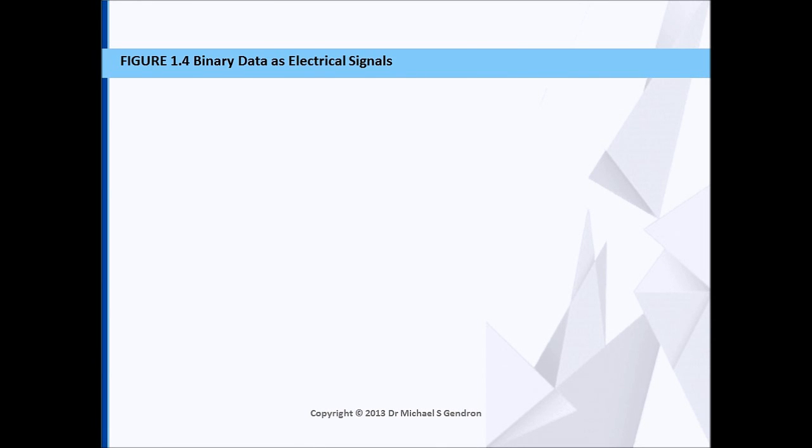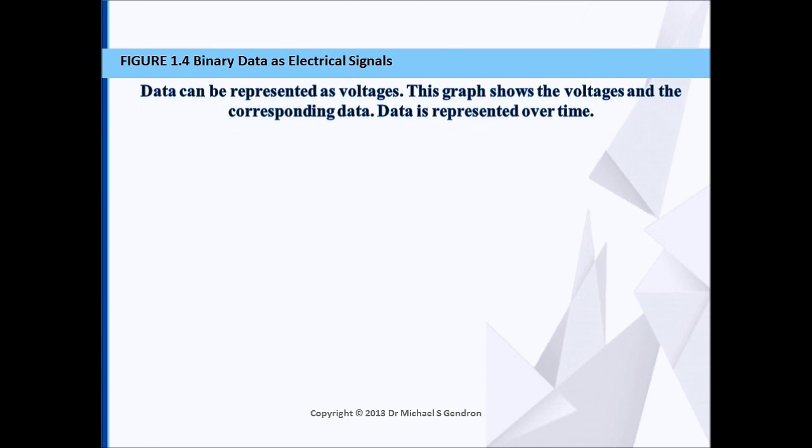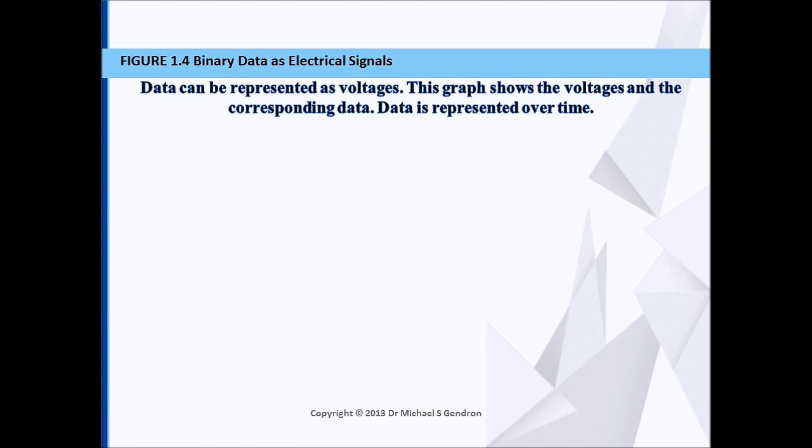Figure 1.4 binary data as electrical signals. Data can be represented as voltages. They can also be represented with radio waves, sound, light, and other waves.